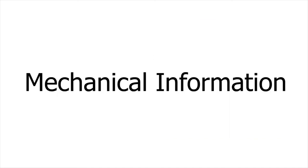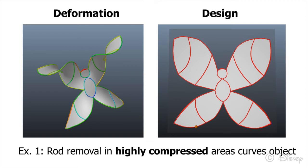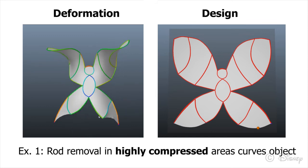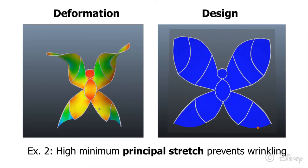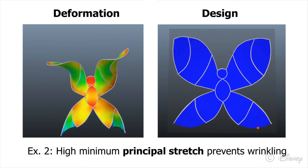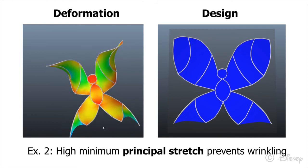Mechanical information: Our interface provides visual information about important mechanical properties, allowing the user to make informed design decisions. For instance, by visualizing deformation in the rods, the user can selectively remove those rods with excessive compression in order to provide more freedom for the surface to bend. Furthermore, by visualizing minimum stretch values in the membrane elements, the user is informed about the likelihood of wrinkling and can increase the pre-stretch if desired.